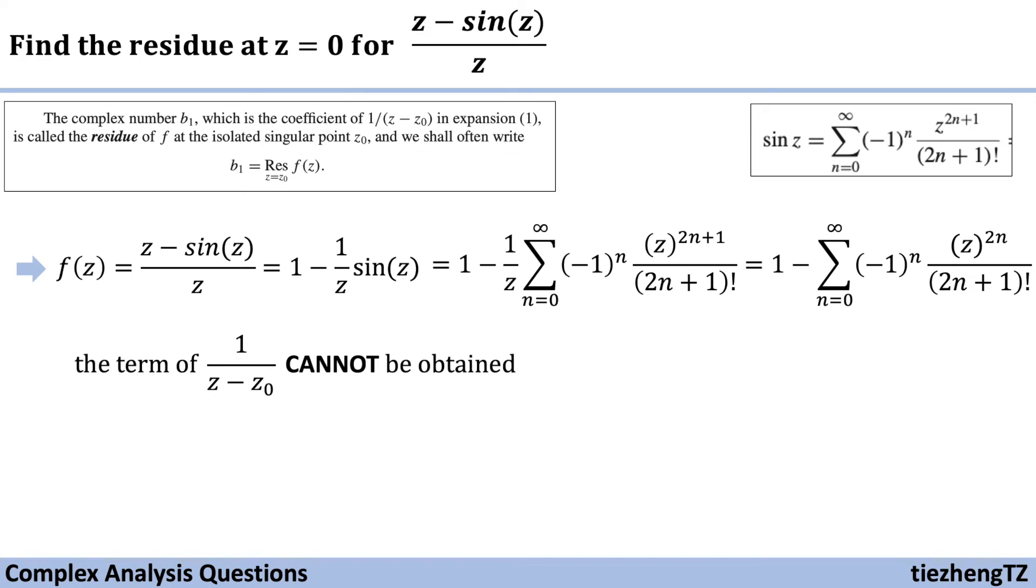To find the coefficient of 1/(z - z₀), examining the expansion form, we see there is no value of n that produces a 1/z term.